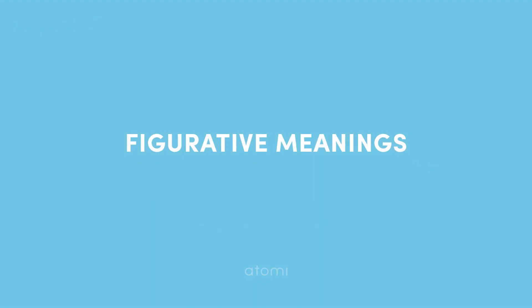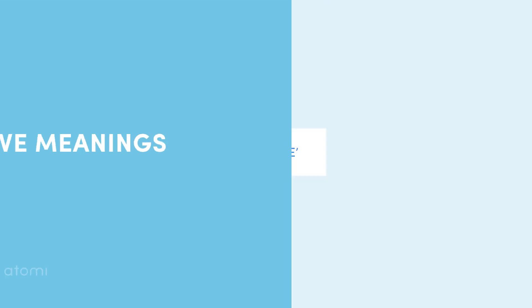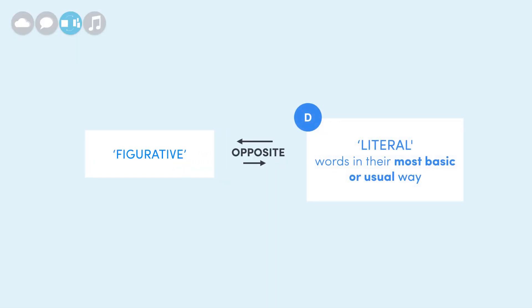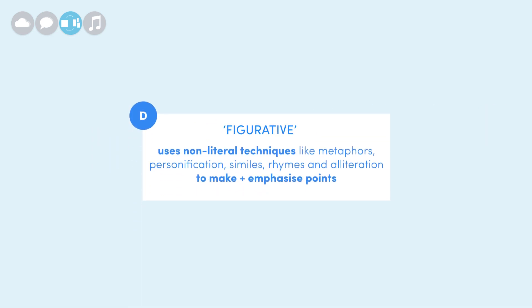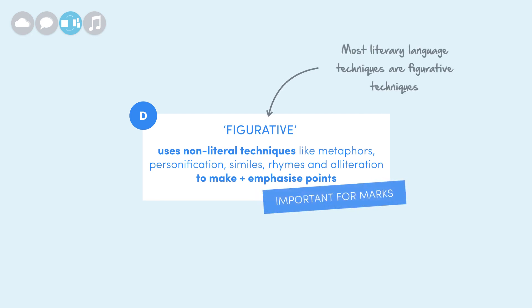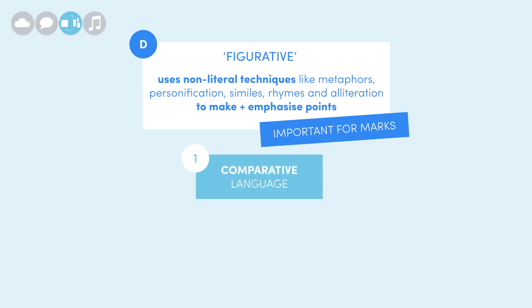Literal language is important, but all the real fun is found in figurative language. Figurative language is the opposite of literal language — it uses non-literal techniques like metaphors, personification, similes, rhymes, alliteration, and many others to make or emphasize points. Most literary language techniques are figurative techniques, so this is where the money is. Let's look at two very broad types of figurative language: comparative language and musical language.